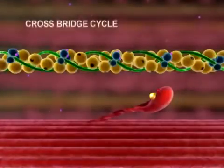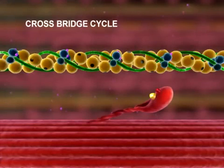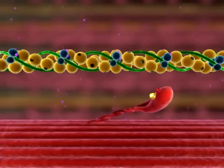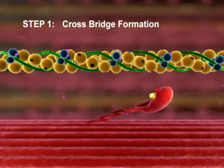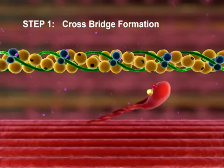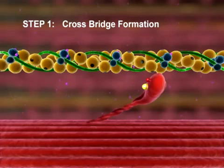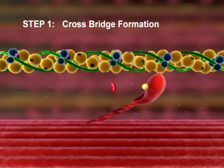A crossbridge cycle may be divided into four steps. Step 1: Crossbridge formation. The activated myosin head binds to actin, forming a crossbridge. Inorganic phosphate is released, and the bond between myosin and actin becomes stronger.